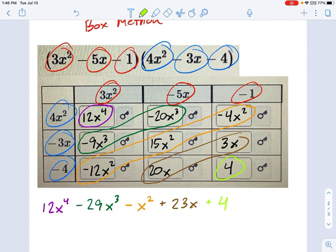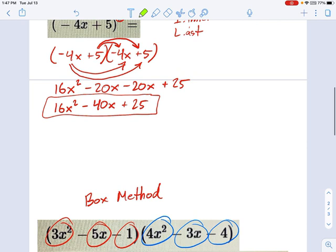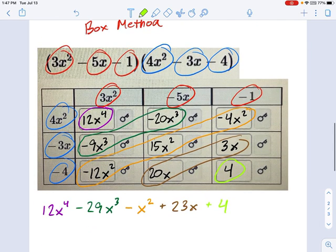So that's how you use the box method. It can usually make this a lot easier to keep track of, especially if you have a trinomial times a trinomial or even more terms. This is probably what you'd want to do. But I don't break this out when you have simple polynomials like two terms times two terms. Those are pretty easy to keep track of.